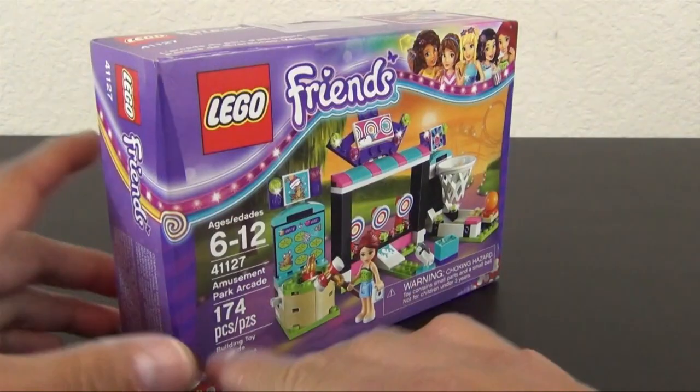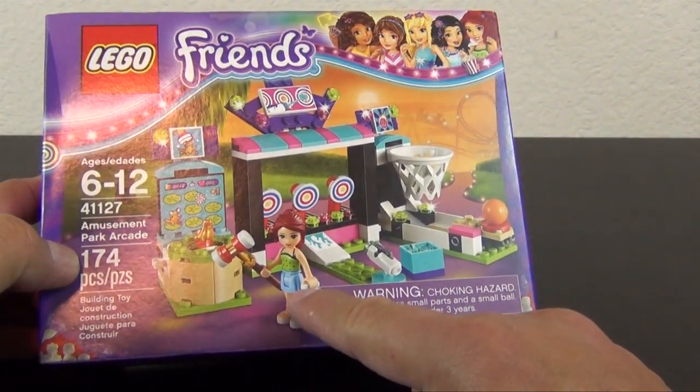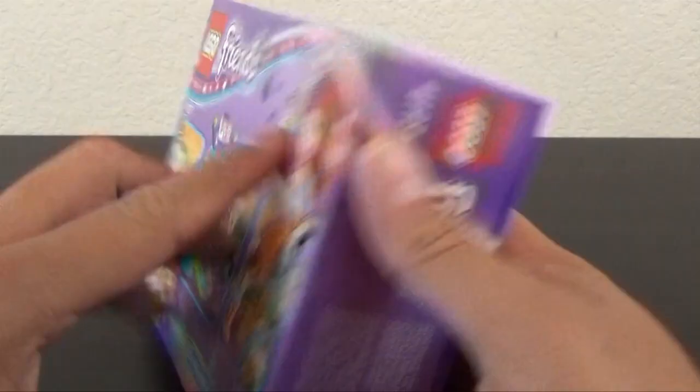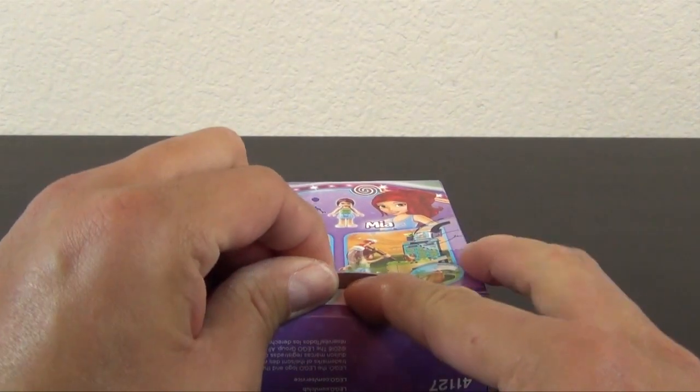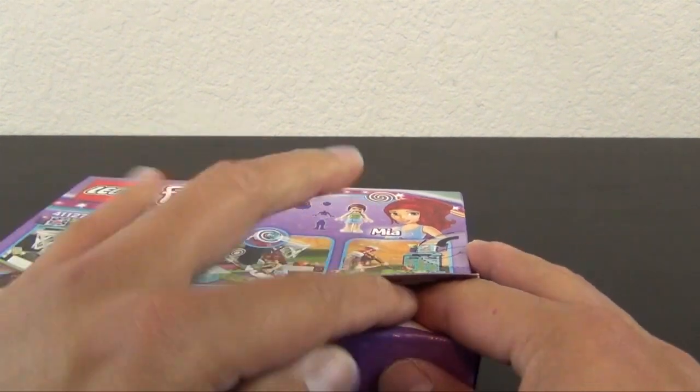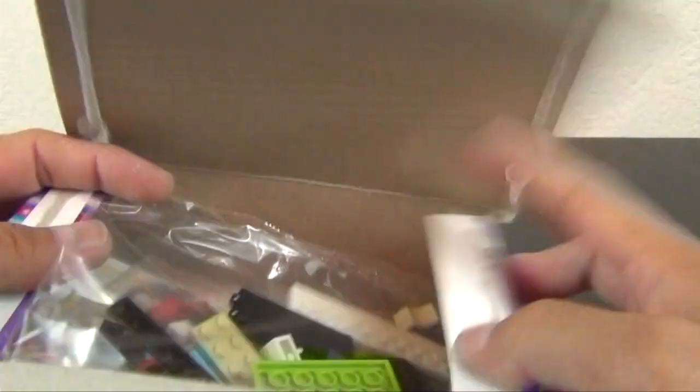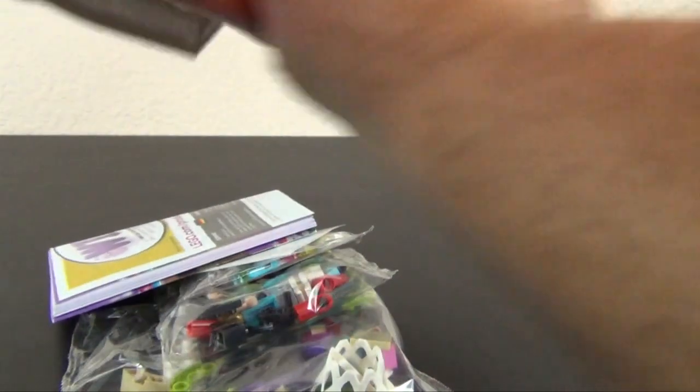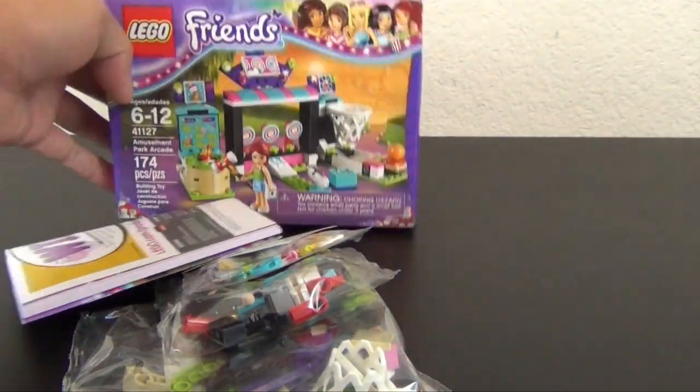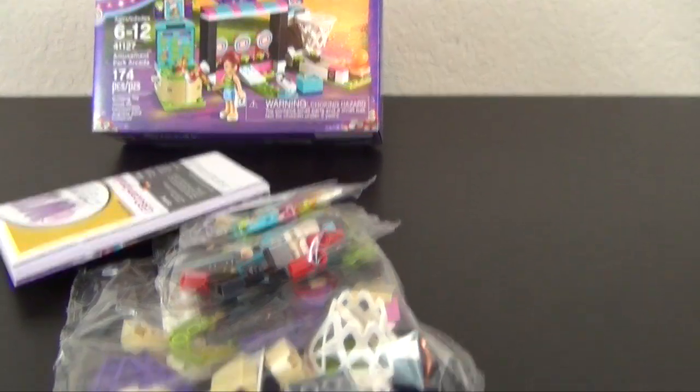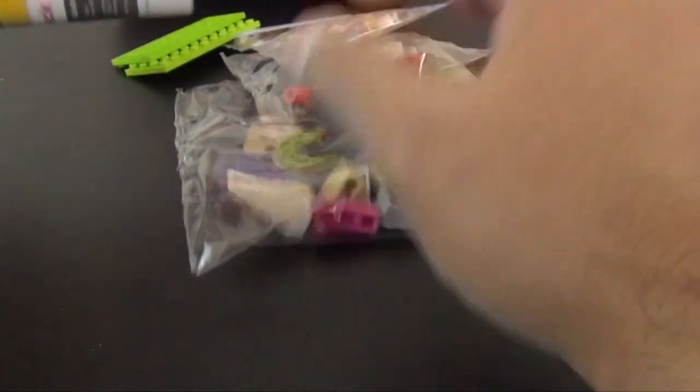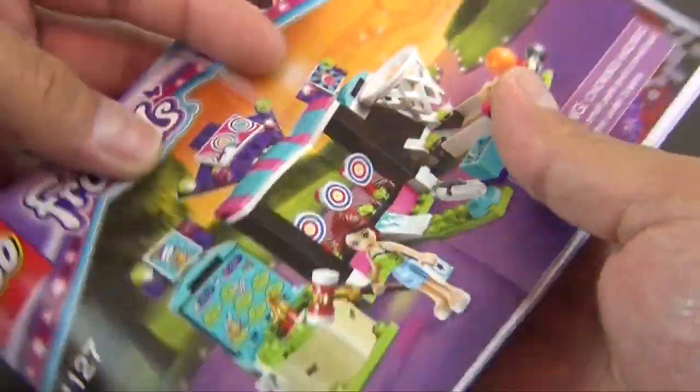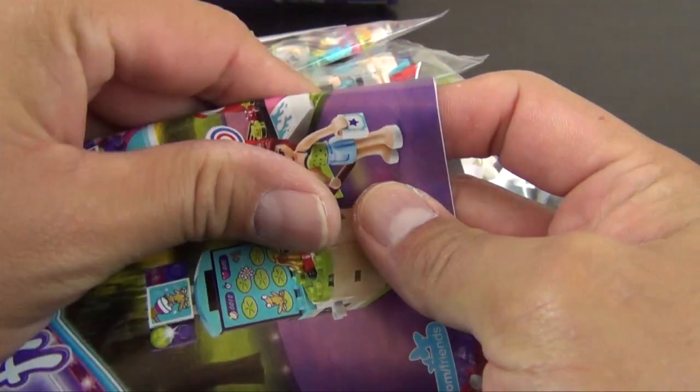It also comes with Mia, attending the park and not necessarily a worker. This box has the little riptop piece. Dump the contents out, move this down ever so slightly, and what do we have in here? We have a single instruction book that's folded in half.